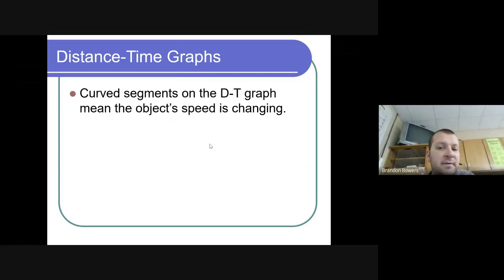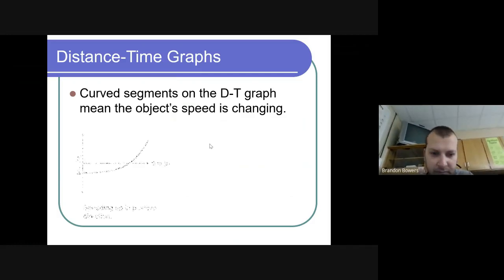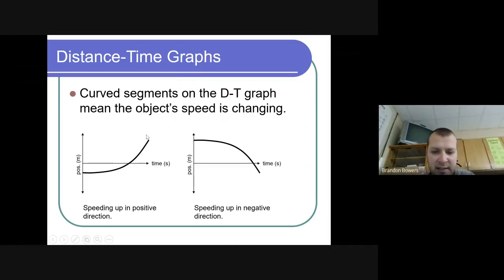Whereas on the other hand, curved segments on the distance-time graph represent the speed is changing. If the speed is speeding up in the positive direction, your curve starts to go up. If it starts curving down, that's negative.